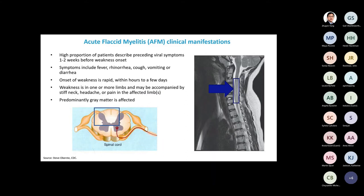Apart from polio, some enteroviruses have implications for human health. Acute flaccid myelitis (AFM) is a similar syndrome to polio. A high proportion of patients describe preceding viral symptoms one to two weeks before weakness onset — symptoms include fever, runny nose, cough, vomiting, or diarrhea. The onset of weakness is rapid, within hours to a few days. Weakness is in one or more limbs and may be accompanied by stiff neck, headache, or pain in the affected limbs. Predominantly grey matter is affected, and in many cases the paralysis is permanent. This is most likely associated with enterovirus D68.